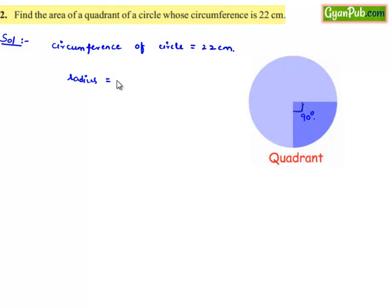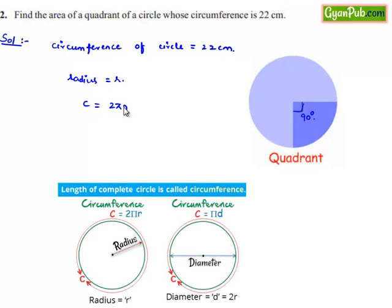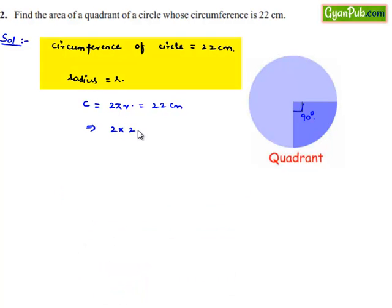Let r be the radius of the circle, then circumference will be equal to 2πr. But according to the problem, the circumference is given as 22 cm which implies 2 times 22 by 7 into r is equal to 22 cm. That implies radius r is equal to 22 into 7 divided by 2 times 22 that is nothing but 7 by 2 centimeters.